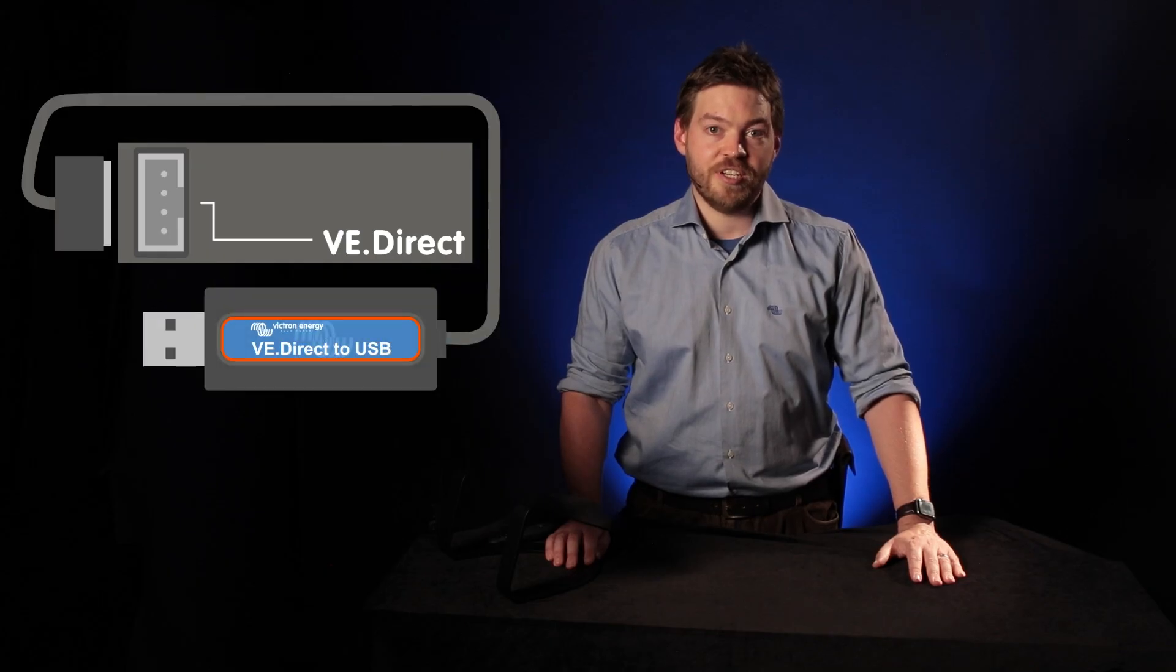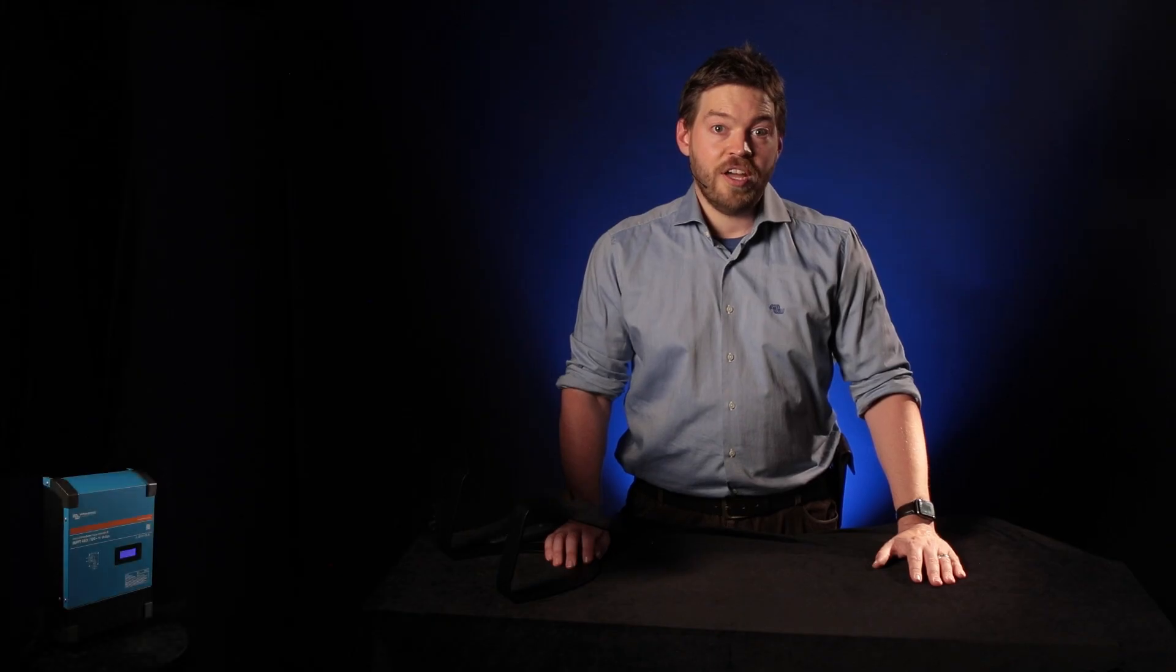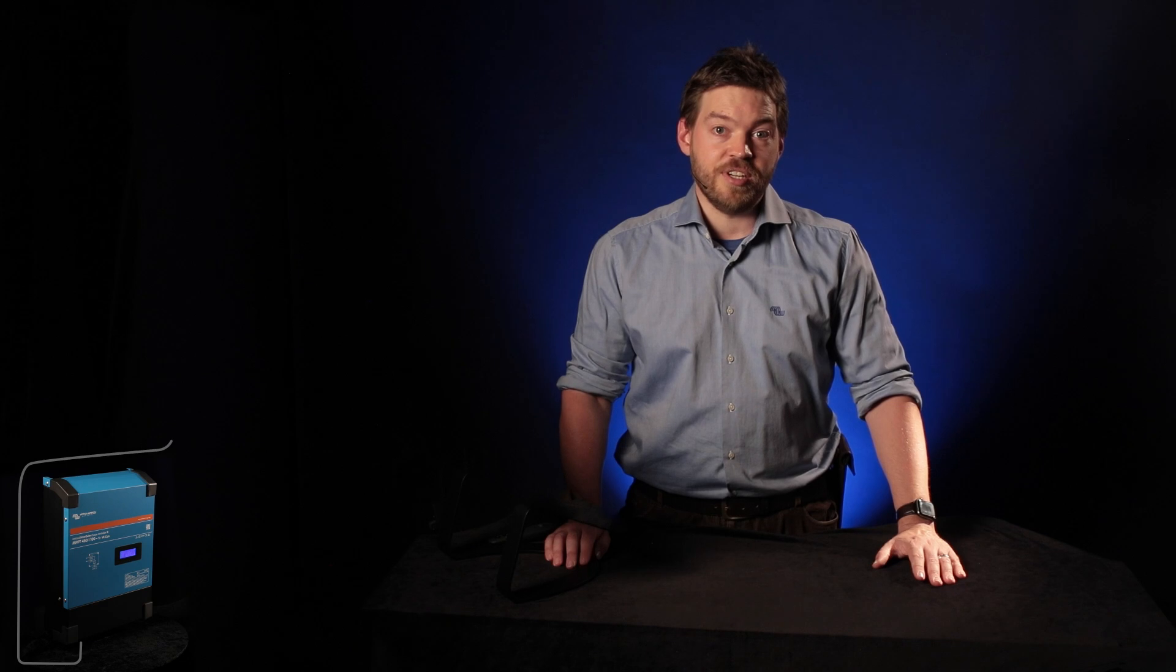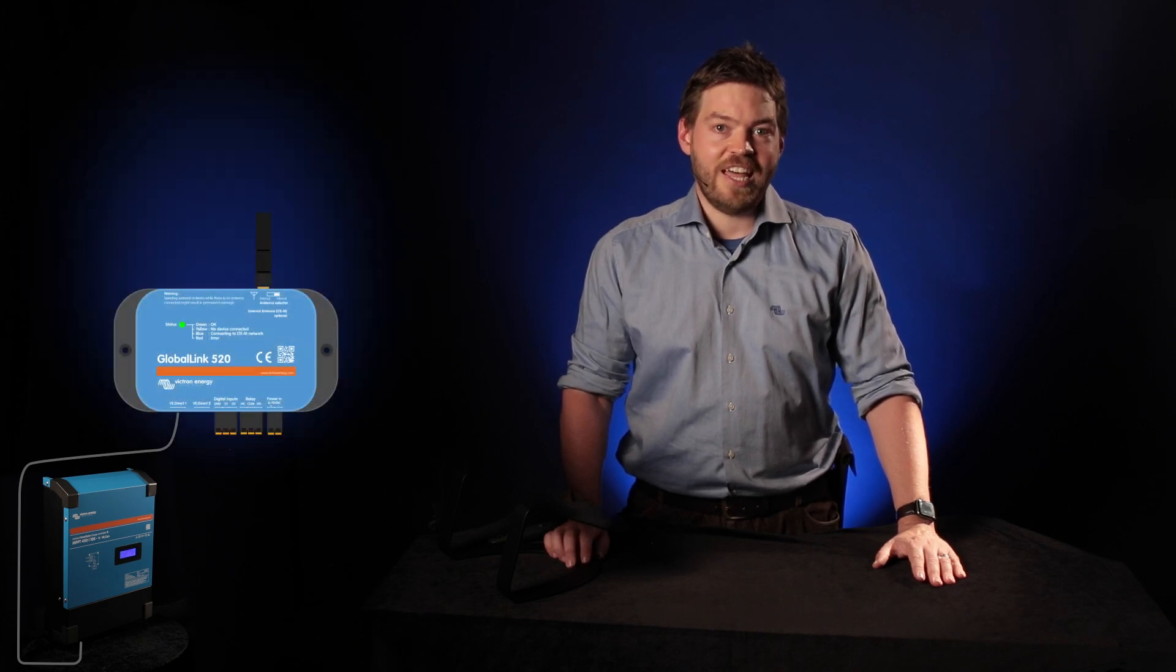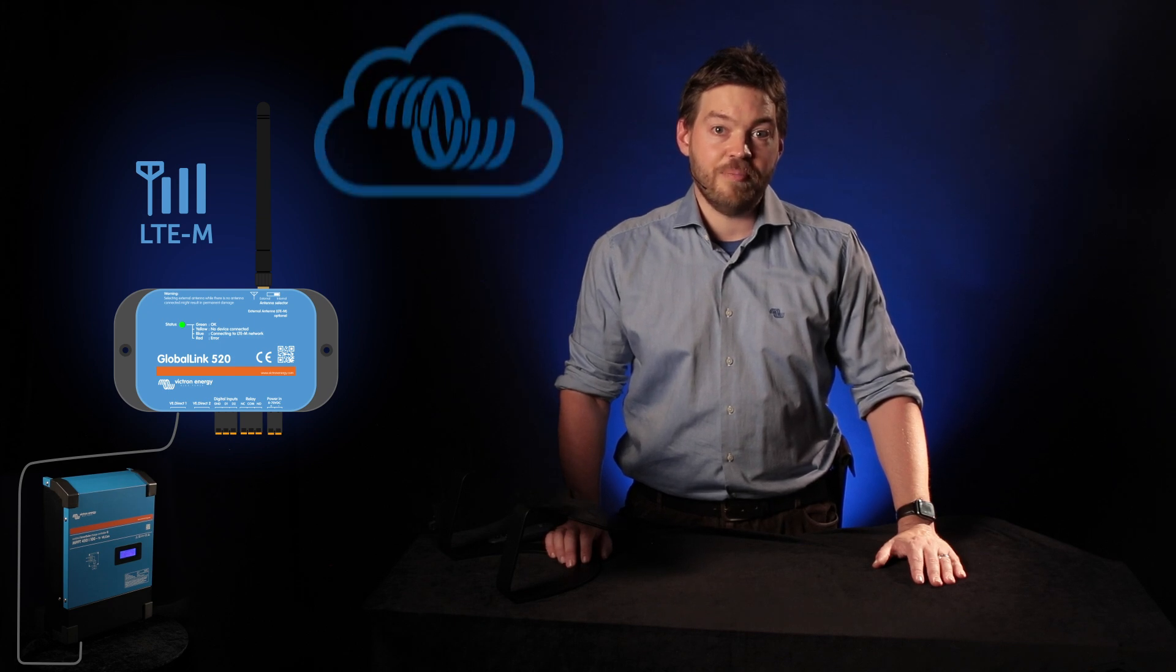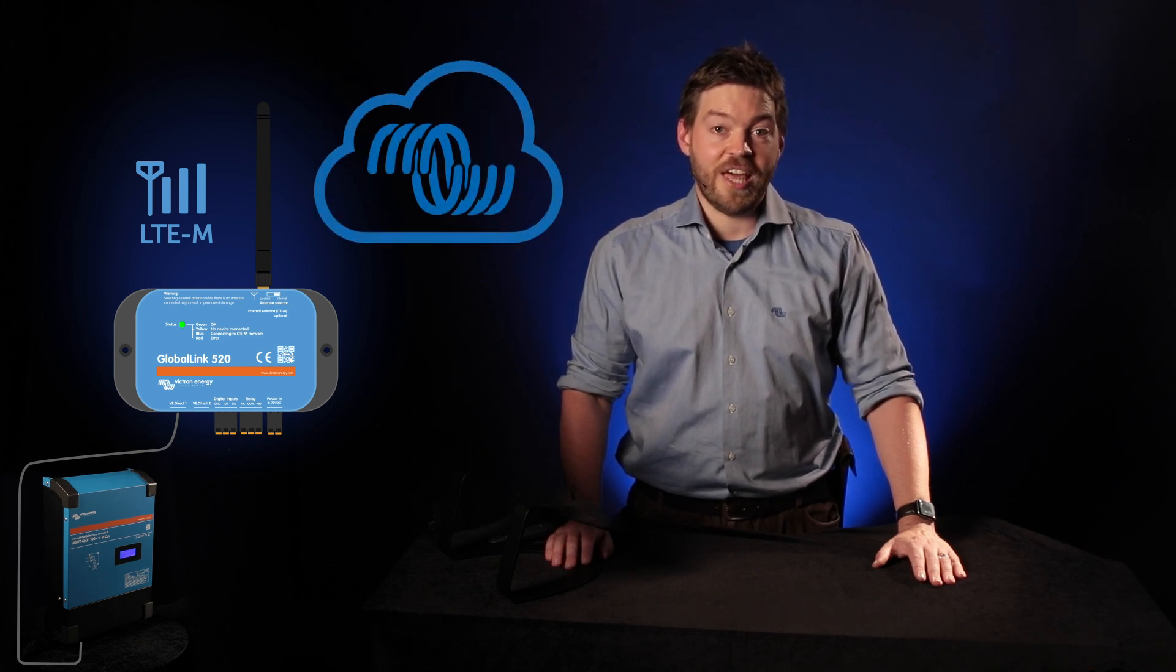The MPPT RS also includes a VE Direct port. This allows you to connect the Victron VE Direct accessories such as a VE Direct to USB adapter to allow connectivity to a Windows laptop for programming or connection to one of the new accessories like the global link. That allows a 4G connection most places of the world so you can connect to VRM and get periodic system information without a GX device.